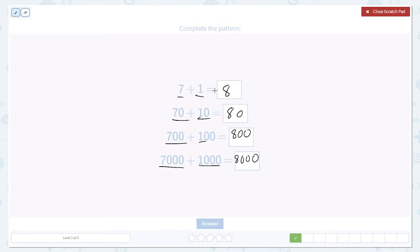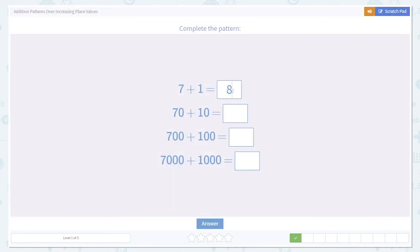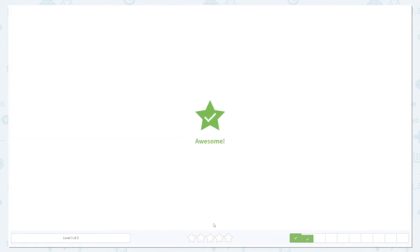And if we check, 7,000 plus 1,000 is actually 8,000. This pattern seems to be working. Let's check our answer. We said 8, 80, 800, and 8,000. Looks good.